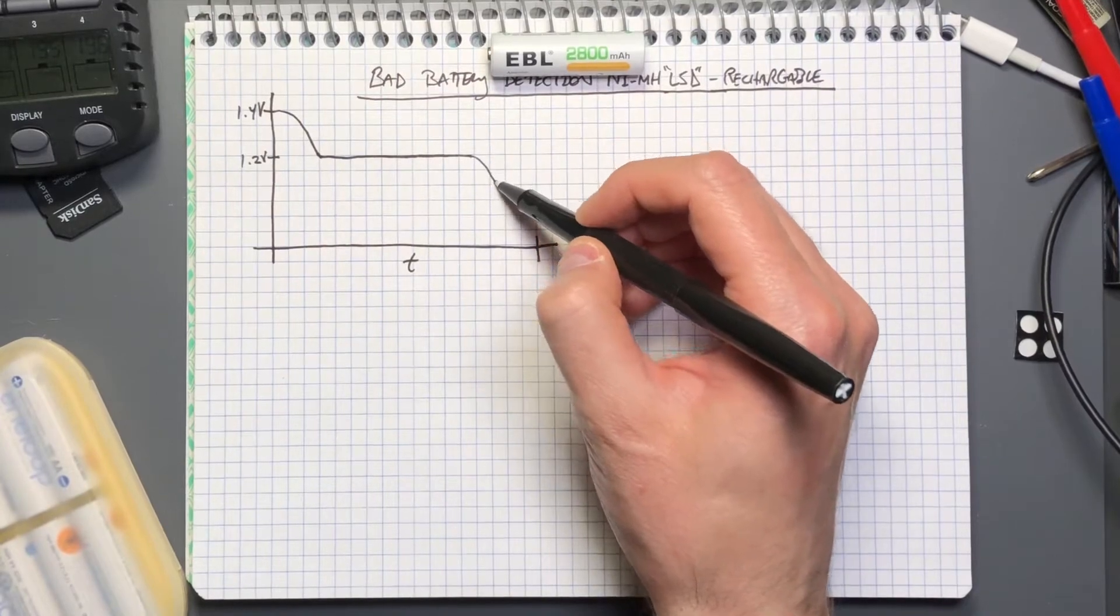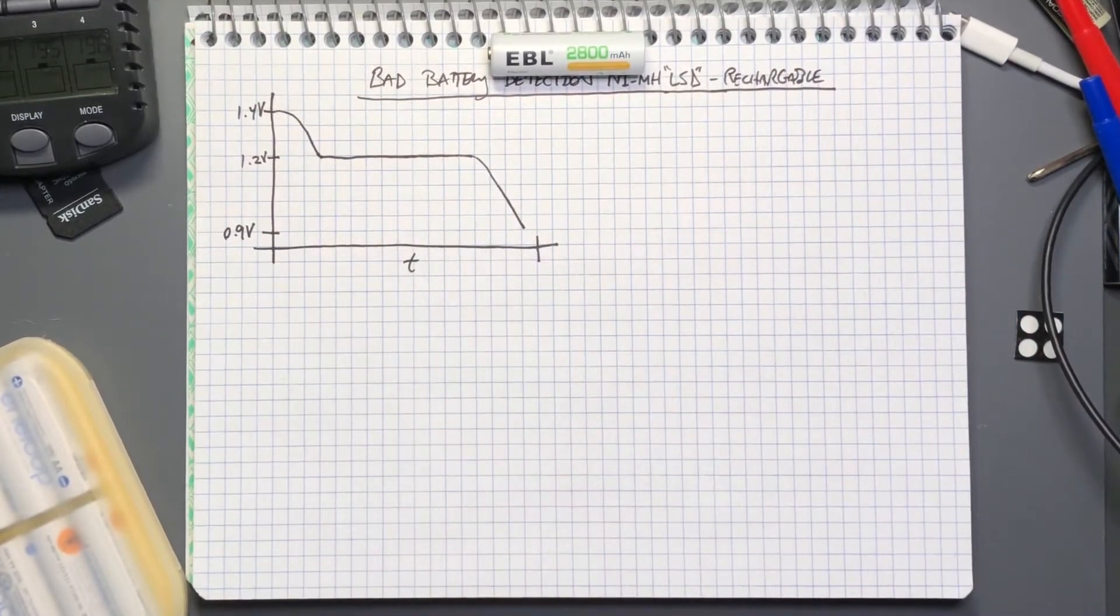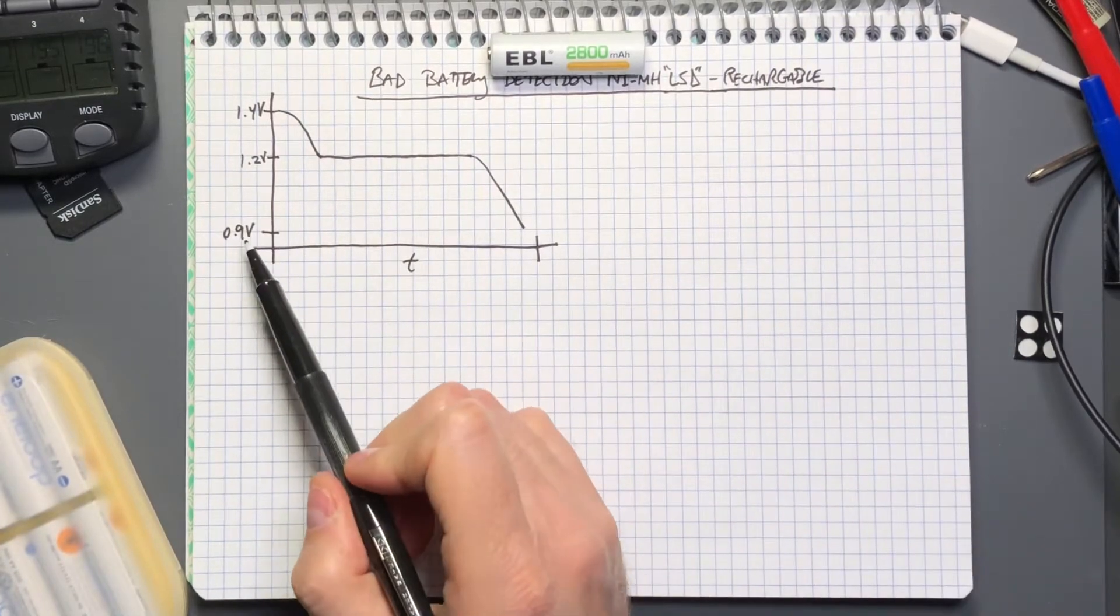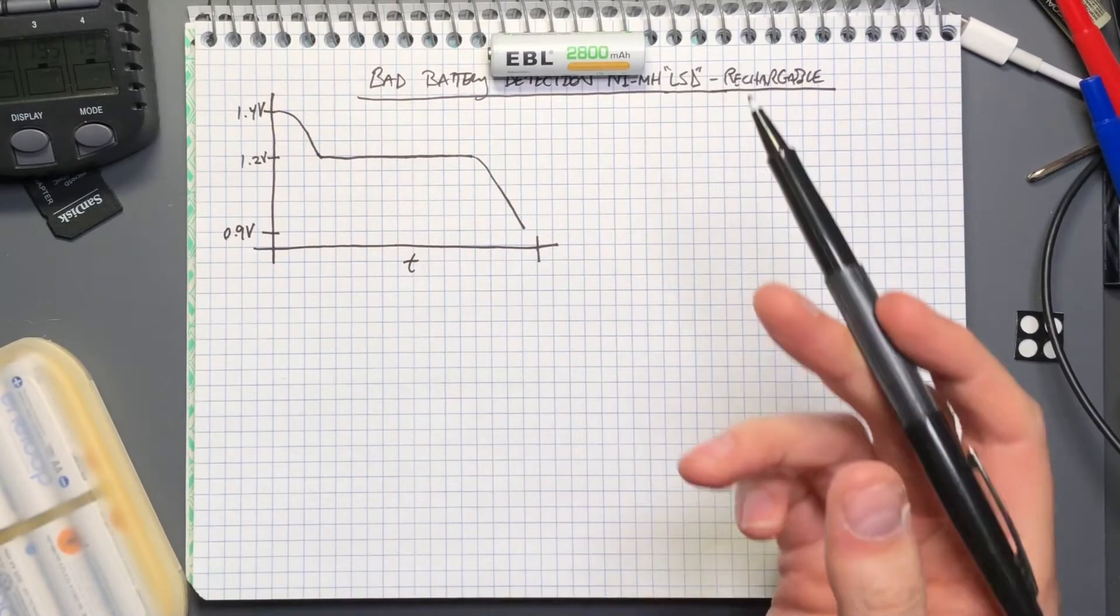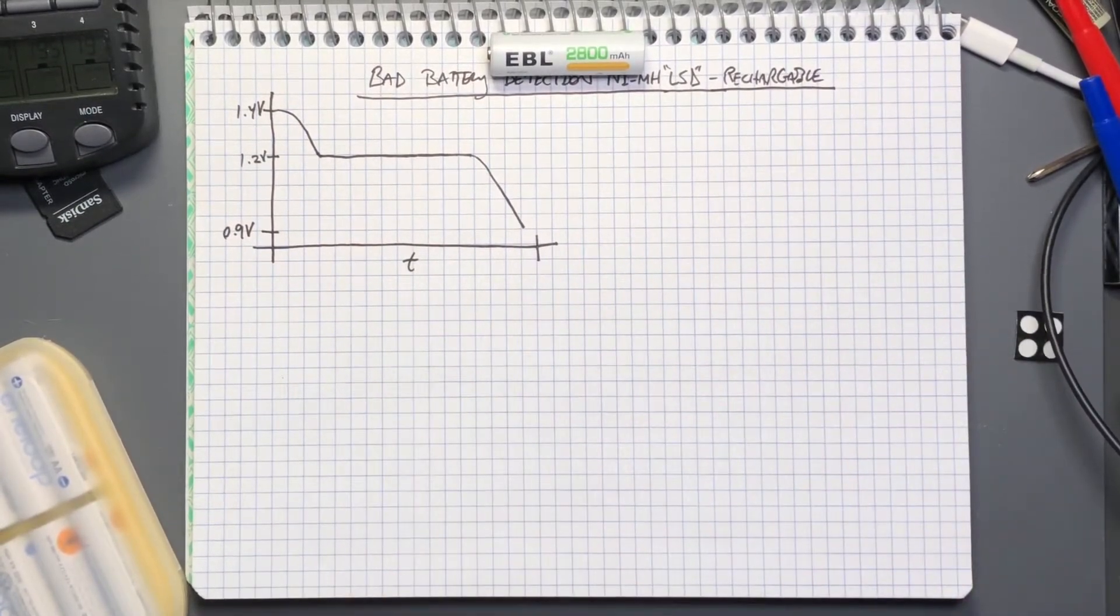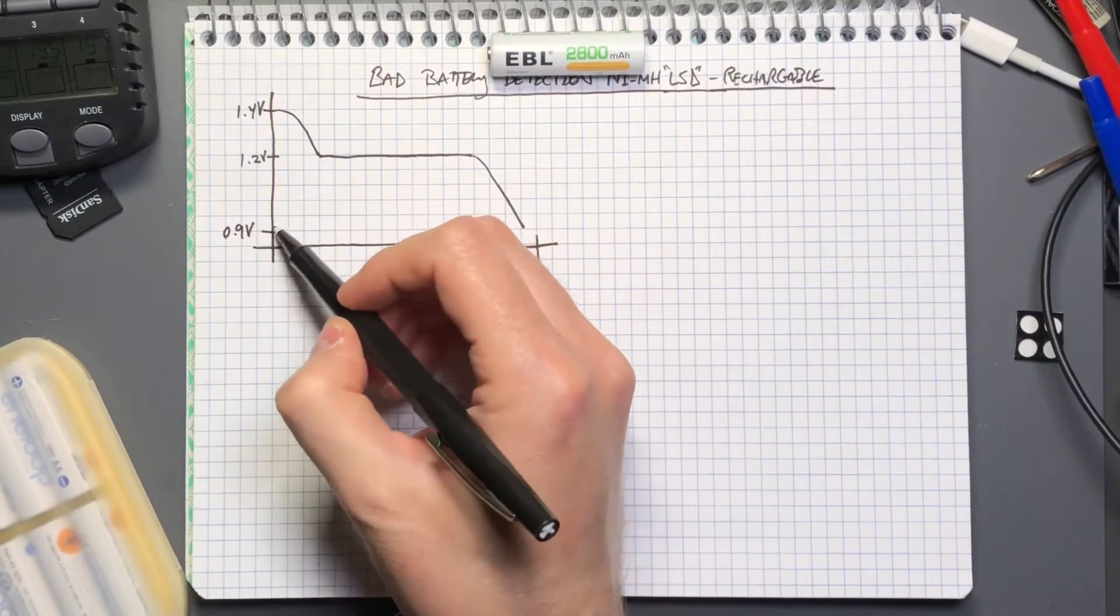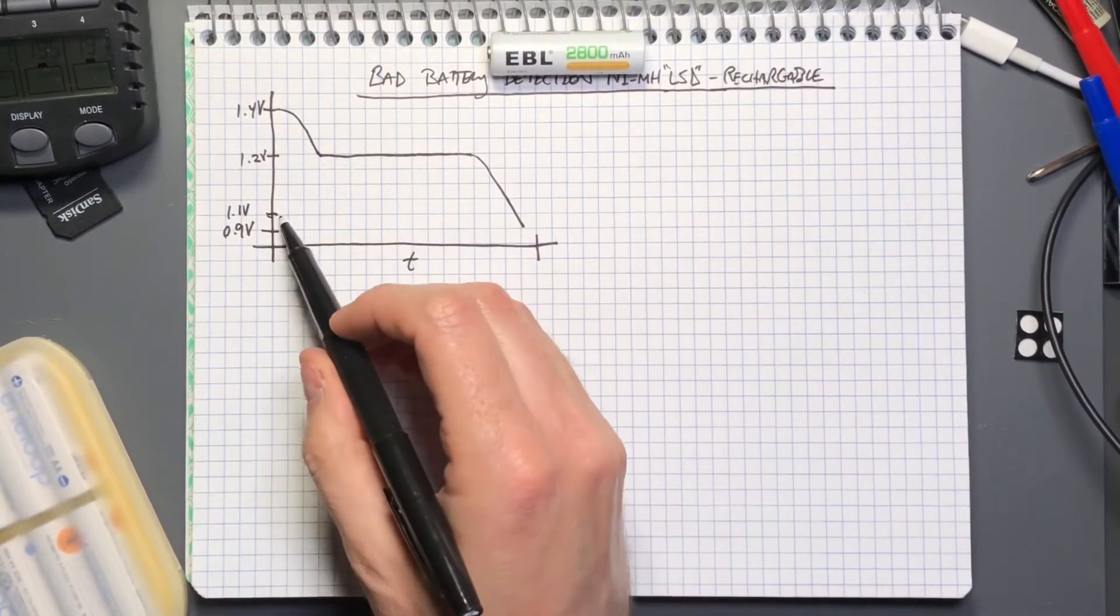Most alkaline batteries and other non-rechargeable batteries have a termination voltage of somewhere around 0.9 volts. So most devices that you put the battery into will indicate low battery or they'll stop operating somewhere between 1.1 and 0.9 volts.